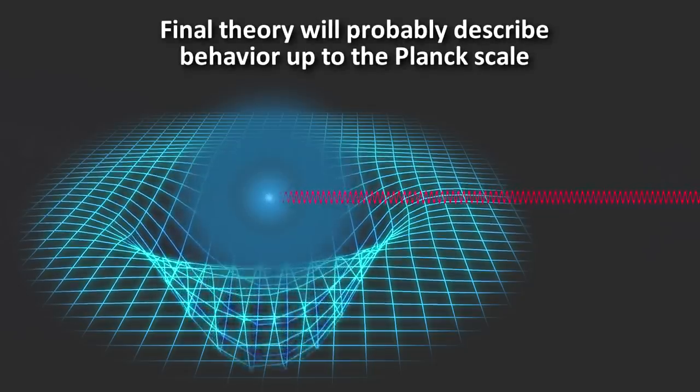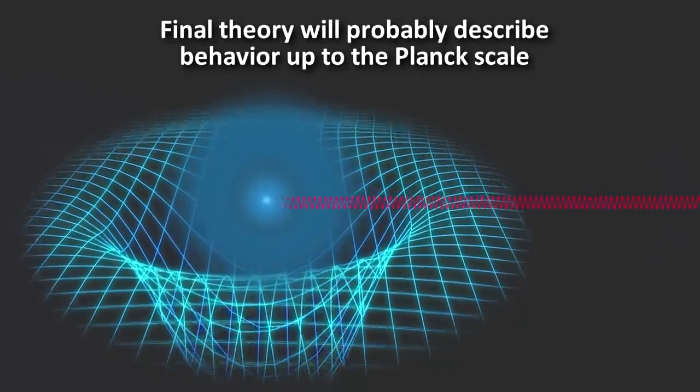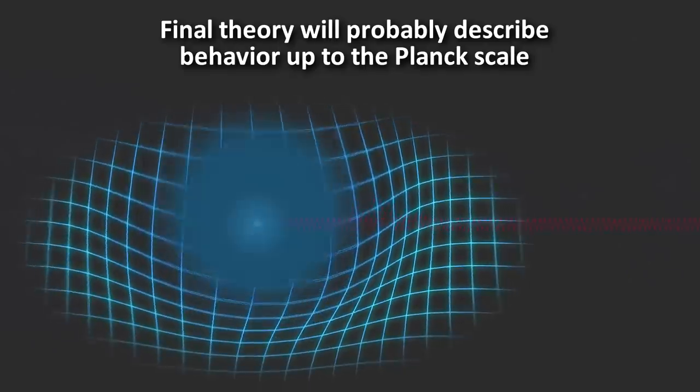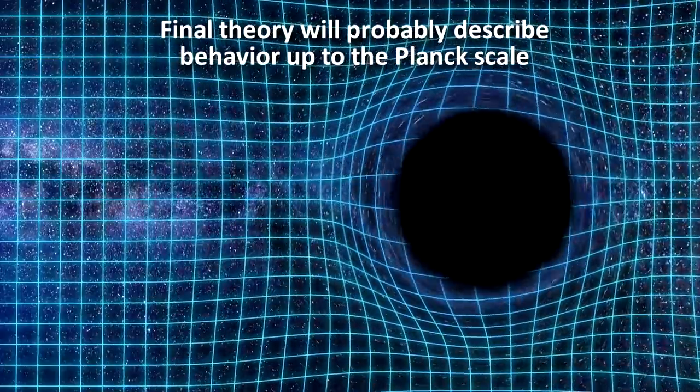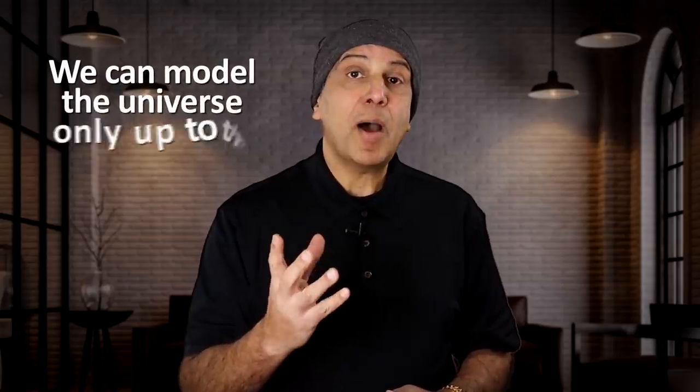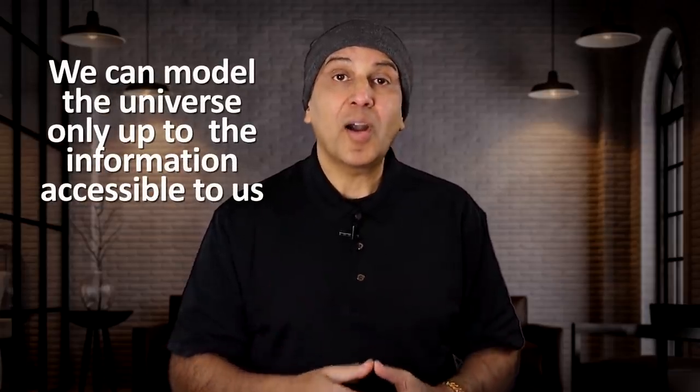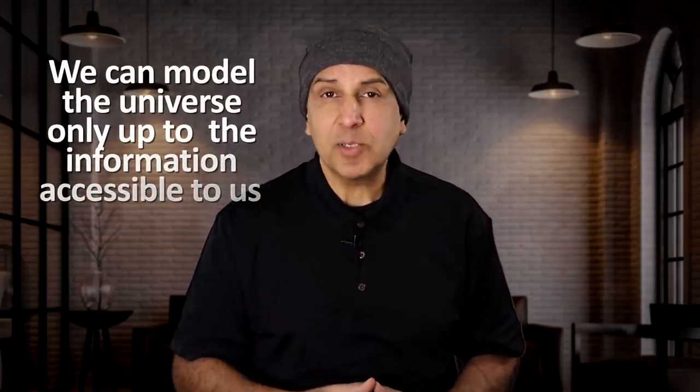That a final theory will exist because if you cannot measure distances beyond a certain length scale, then it makes no sense to have theories beyond that point because you would never be able to test them. You may say, well, just because we can't measure something, it doesn't mean that something doesn't exist beyond this scale. And you may be right about that. But our theoretical models can only go so far as the information accessible to us.